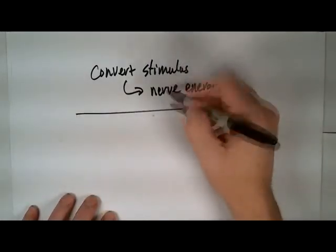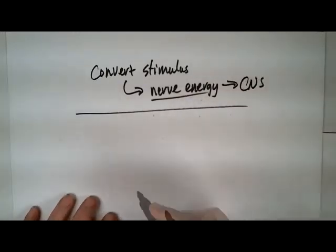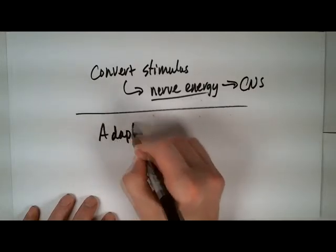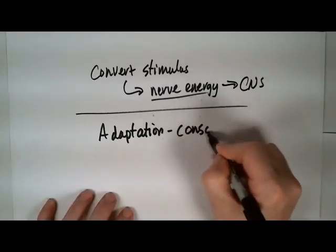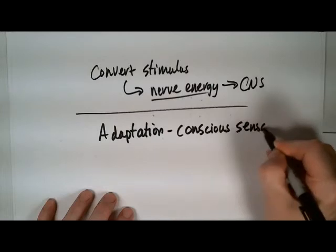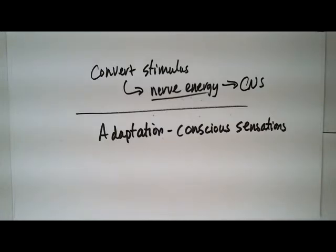You have to understand that even though we have this conversion and this nerve energy is sent to the central nervous system, there's a point where we get what's called adaptation. Adaptation is this conscious thought — the understanding that sensation declines as the stimulation continues. The best example I can think of is holding someone's hand. At first, when you hold that girlfriend or boyfriend's hand, you're like, 'I'm holding their hand.' You have this conscious understanding of what you're doing. After a while, you may lose that conscious sensation — you have adapted to that stimulus.